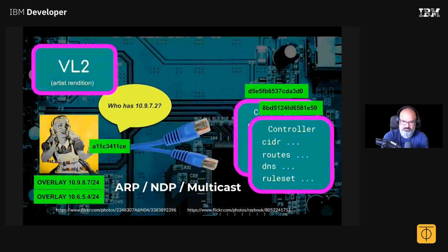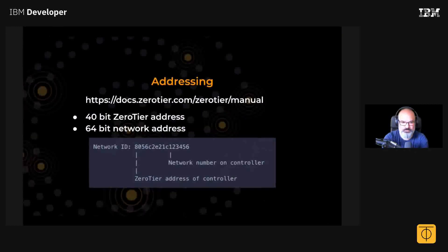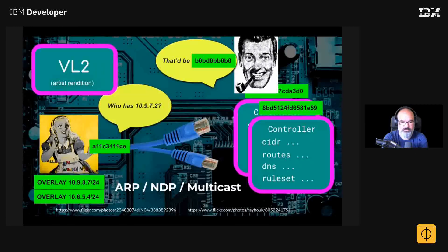If she's got this IP and she sends out an ARP — asking who's got this IP address — ZeroTier can do its magic, and Bob's your uncle.